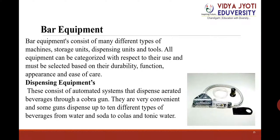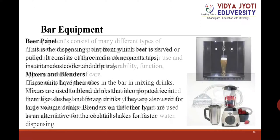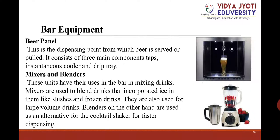Bar equipment — dispensing equipment: These consist of automated dispenser systems that dispense aerated beverages through a cobra gun. They are very convenient, and some guns dispense up to 10 different types of beverages, from water and soda to colas and tonic water. Beer panel: This is a dispensing point from which beer is served or pulled, consisting of three main components — taps, instantaneous coolers, and drip tray.